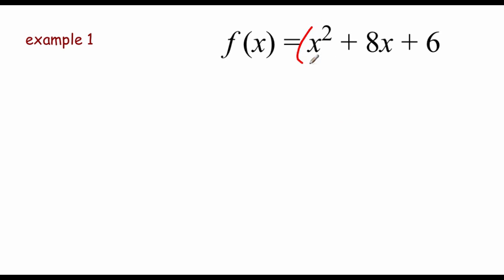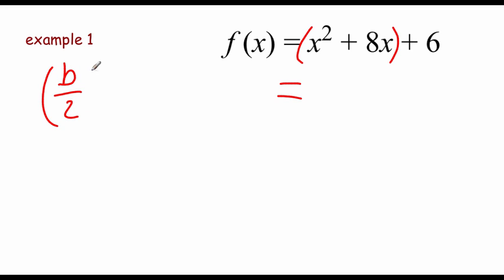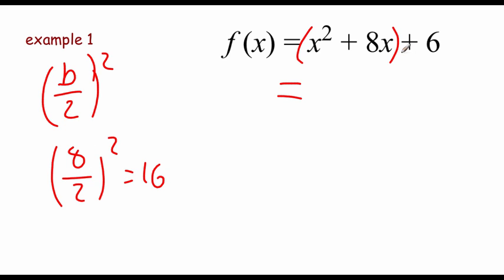We're going to group these first two terms together in our quadratic function to try to get it to factor into standard form. We need to change this equation a little bit using a process called adding zero — whatever we add to one side we subtract right away, so we don't change the balance. To figure out what to add, we focus on the b value: take b divided by 2 and then square it. With b equal to 8, that's 8 divided by 2 is 4, squared is 16.